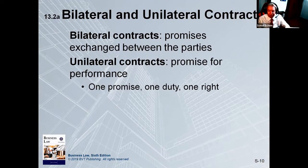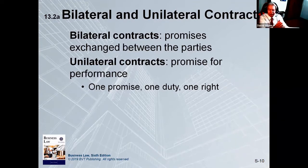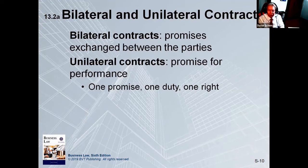You want services from a business, they want your money. We agree to buy the services, we agree to pay a certain amount, they give us the services, we give them the money. That's pretty straightforward, whether it's your internet contract, your cell phone contract, or the lease for your office. That's a bilateral contract.